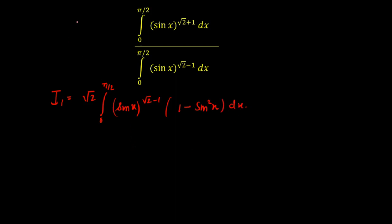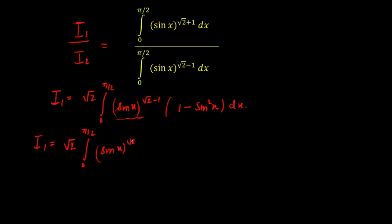So I1 = √2 times the integral from 0 to π/2 of sin(x)^(√2−1) · (1 − sin²(x)) dx. As noted, the first integral is I1 and the second is I2. Our goal is to find the ratio. Multiplying inside: the first term gives sin(x)^(√2−1) · 1 = sin(x)^(√2−1), which is I2; the second term gives sin(x)^(√2−1) · sin²(x) = sin(x)^(√2+1), which is I1 (since the powers add).